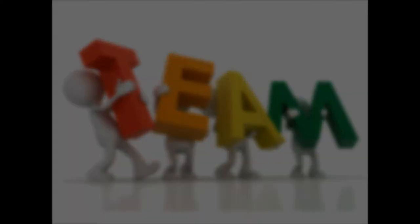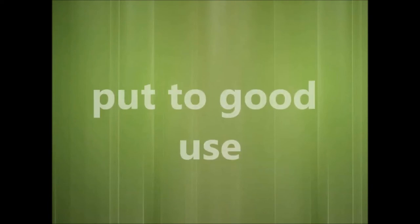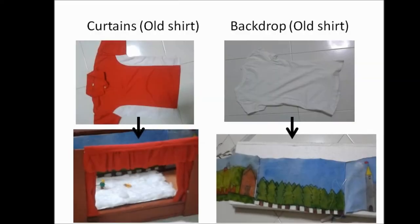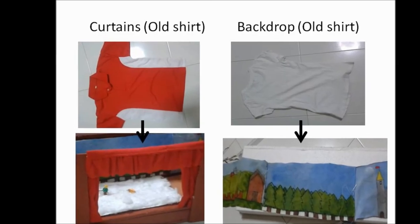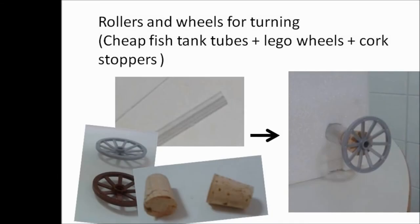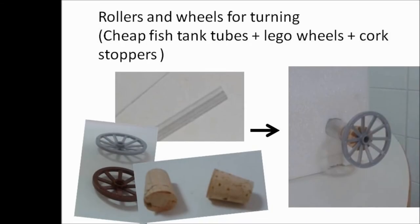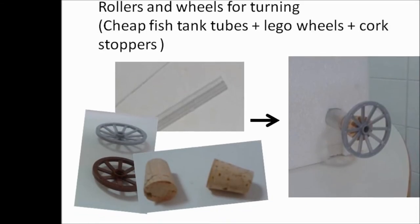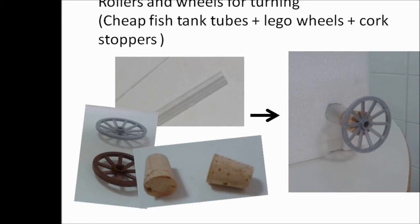Some of the materials that we felt were put to good use: we used our old t-shirts to make red curtains and also for the backdrop. We also used gobstoppers, Lego wheels, and cheap fish tank tubes to form rollers for the treadmill.